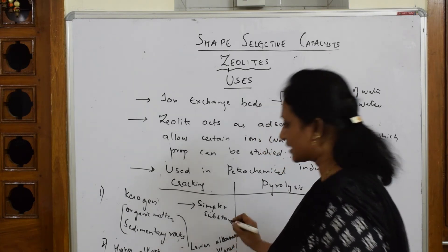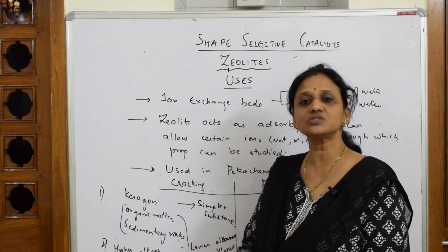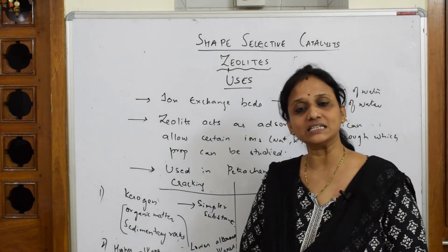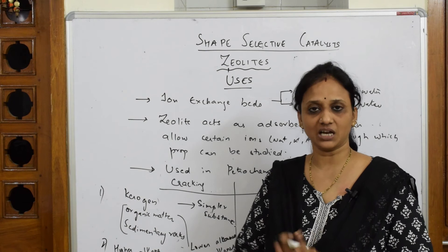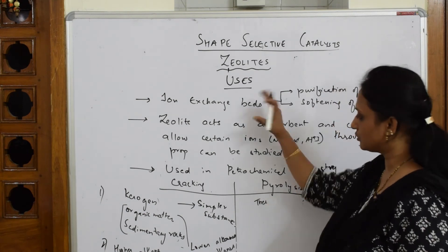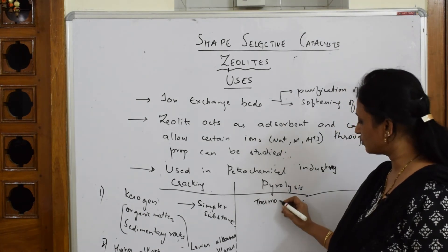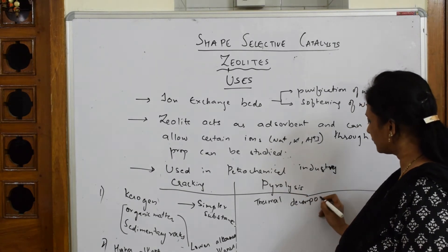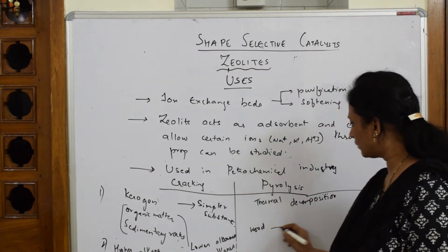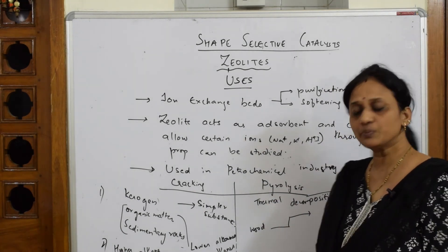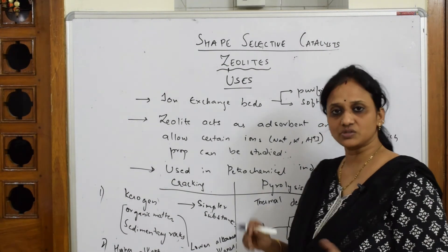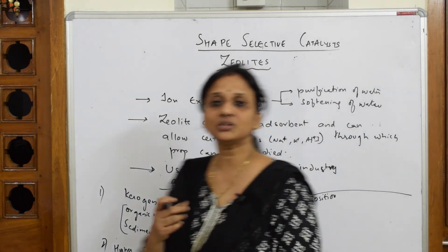Now let's come to pyrolysis. Pyro means heat, so it is a thermal decomposition reaction — using heat to allow substances to decompose into products. Zeolites are used here to enhance thermal decomposition. For example, if you take wood and allow it to undergo pyrolysis, it decomposes into three important products.